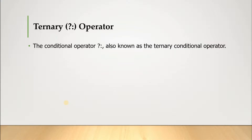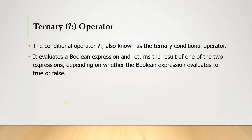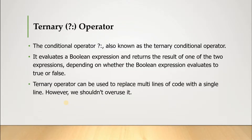The ternary operator is nothing but the conditional operator, also known as the ternary conditional operator. It evaluates a boolean expression and returns the result of one of two expressions depending on whether the boolean expression evaluates to true or false. When we have to evaluate two conditions based on true and false, we use the ternary operator.